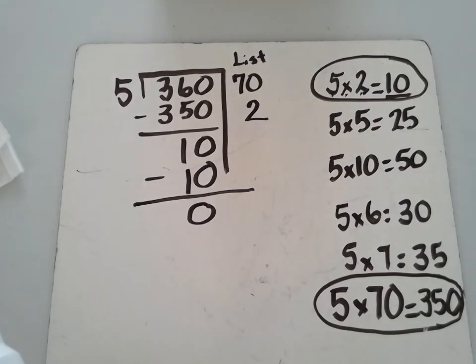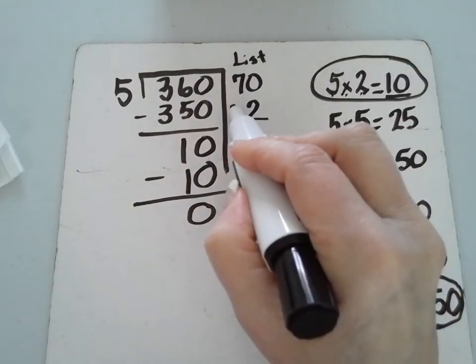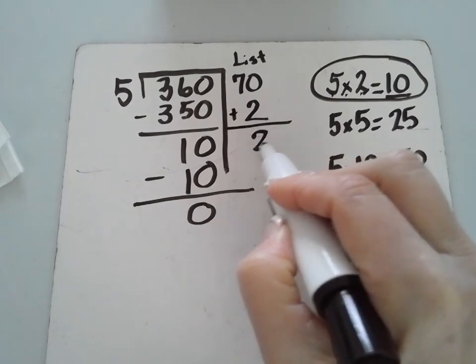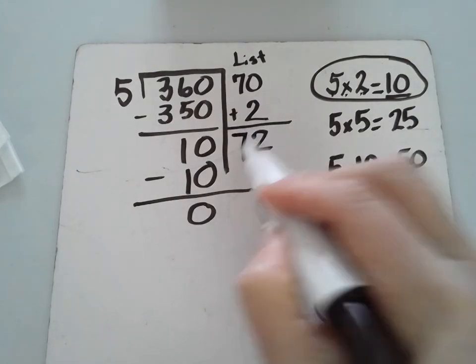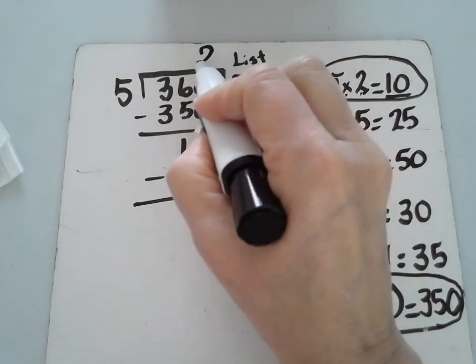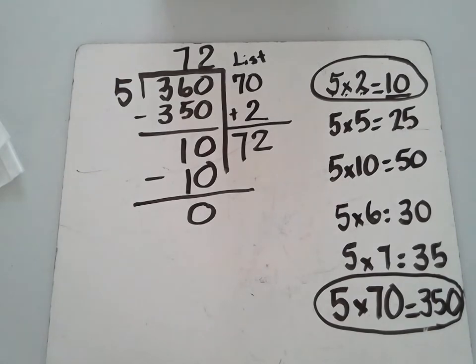All right. I'm not quite finished yet. There's one more step. I need to add my list together. And that's going to give me my quotient. So, the quotient for this problem is going to be 72 with zero remainders. A remainder would be a number smaller than five that would be left over. But we don't have one.